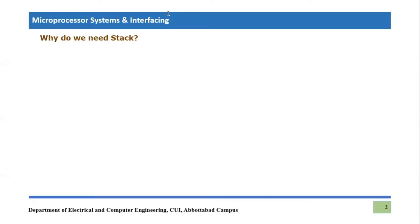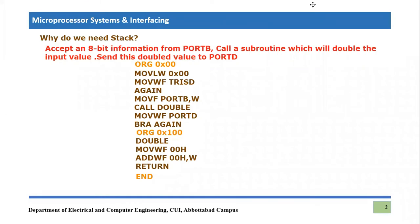First of all, we will try to answer a question: why do we need a stack? To answer that question perfectly, we will write a code and place it in program memory, then see how the program counter will be pointing to the next instruction. The code will accept an 8-bit information — that is the instruction we are given with. So port B will serve as an input port, we will receive 8-bit information, and call a subroutine which will double the input value.